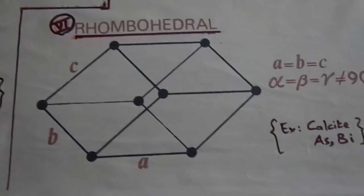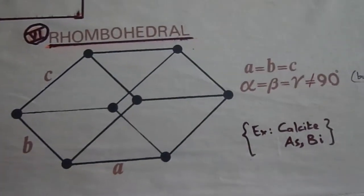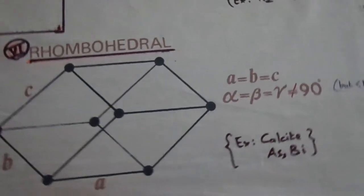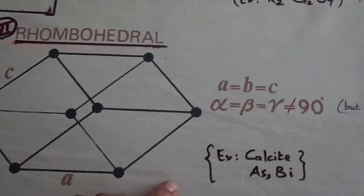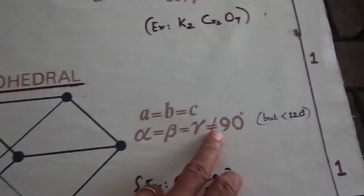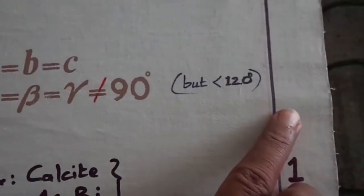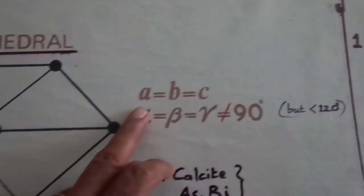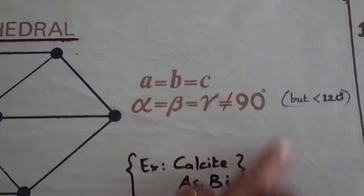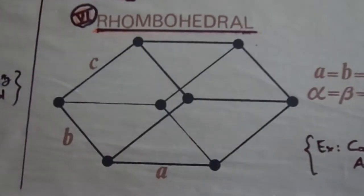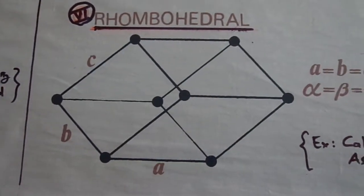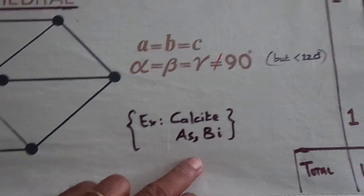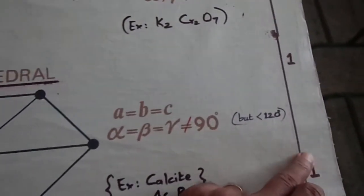Then the sixth one: rhombohedral. Alpha, beta, gamma are all not equal to 90 degrees but less than 120 degrees. A is equal to B is equal to C. The structure is as shown here with examples, and this makes one type under it.